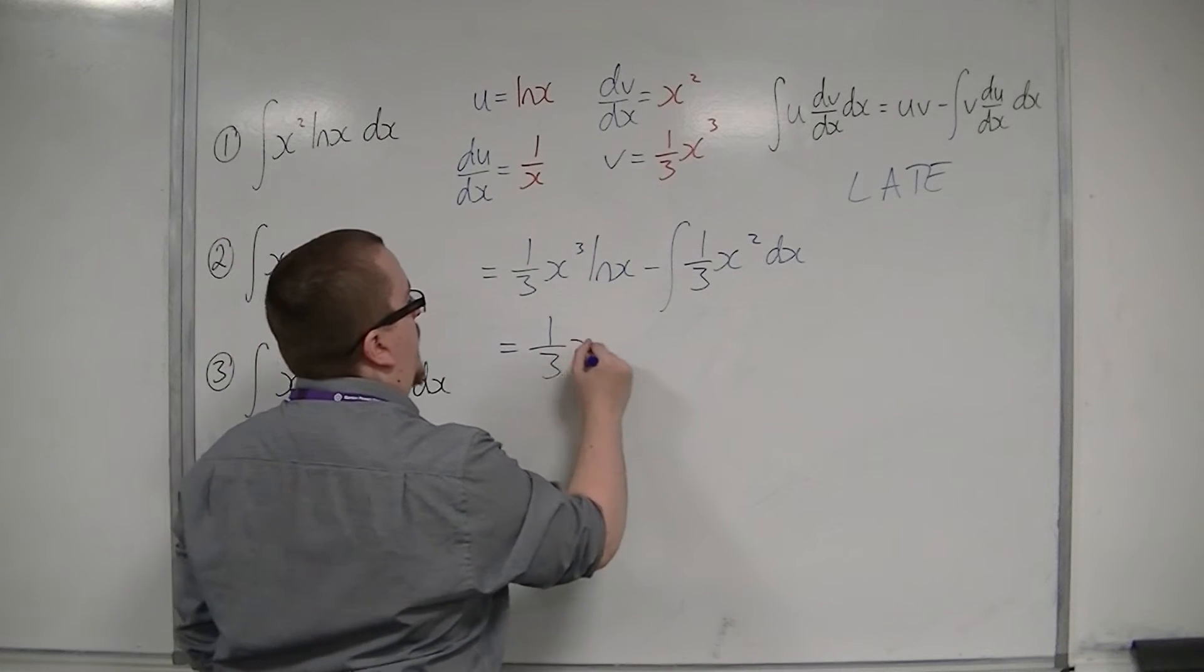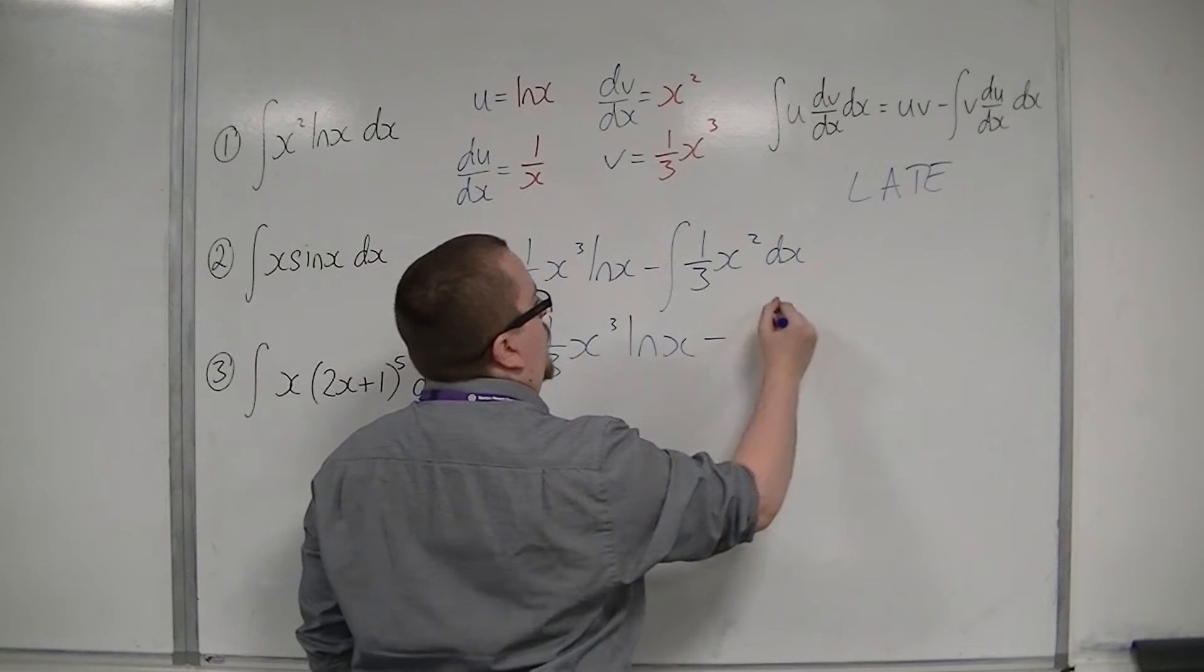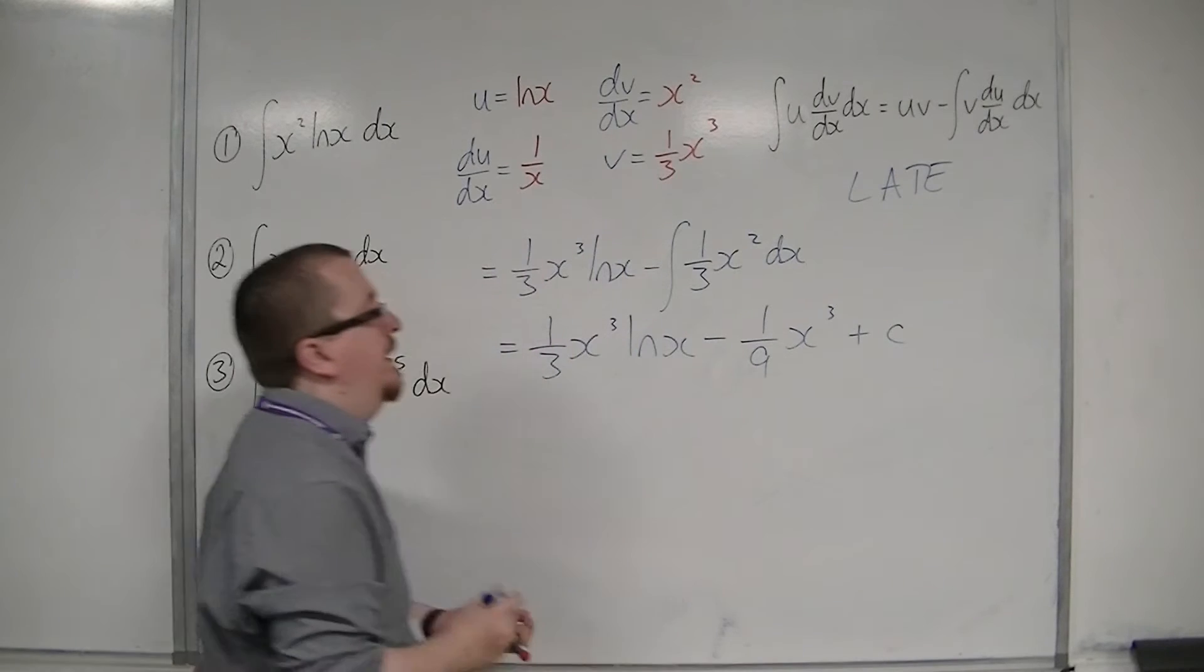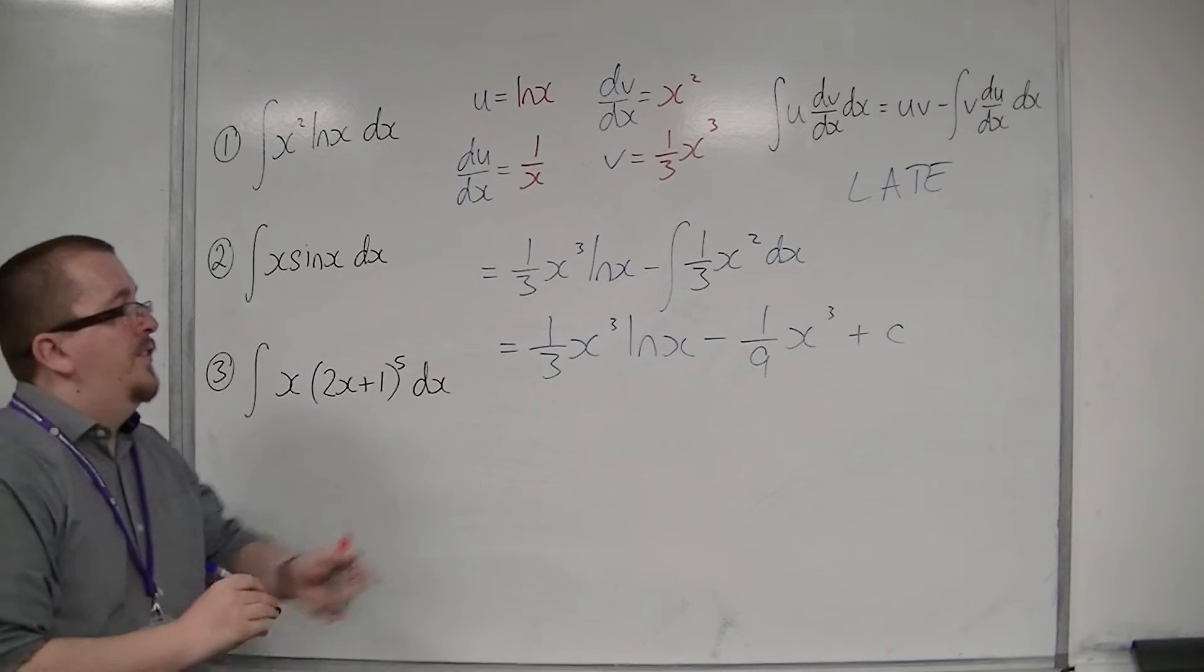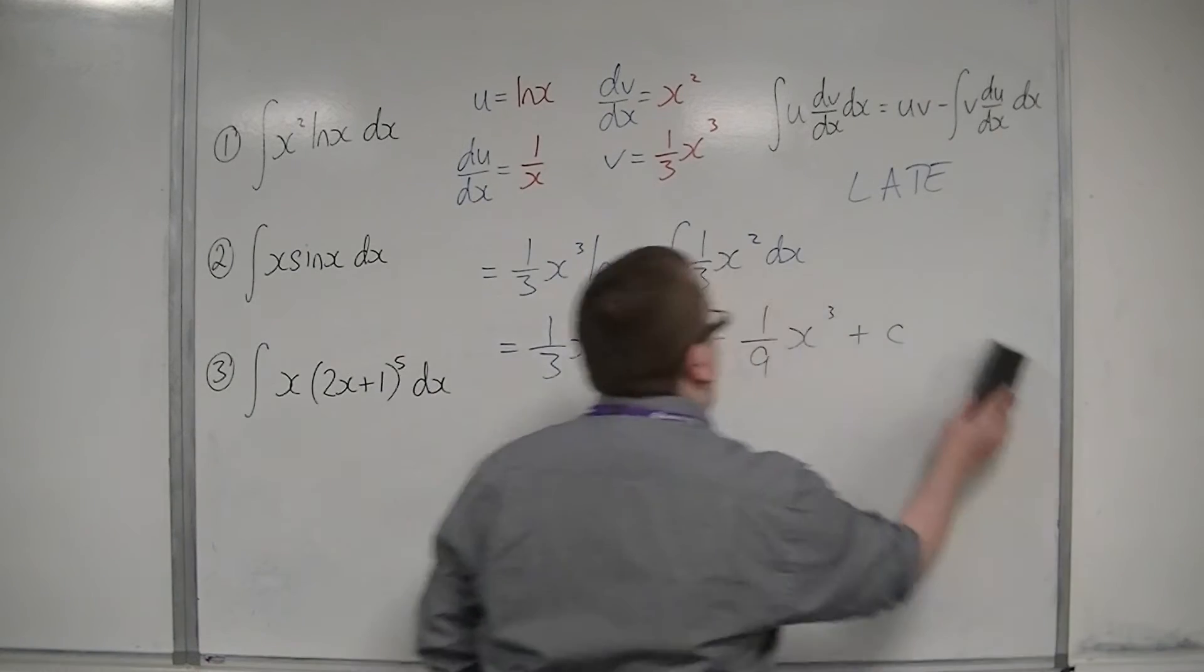And so now, that's 1 third x cubed log x. Integrate that is 1 ninth x cubed plus a constant c. And that is the answer to the problem. So that's the first one.